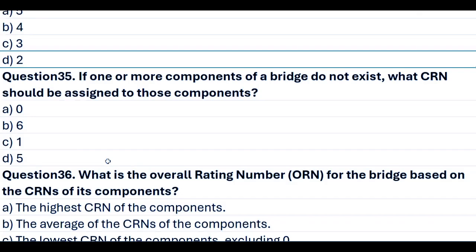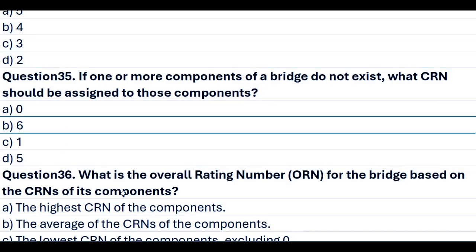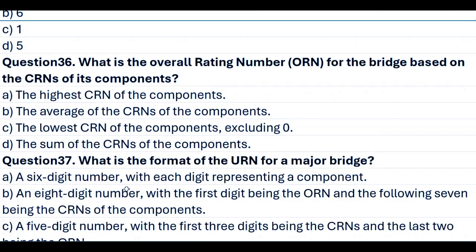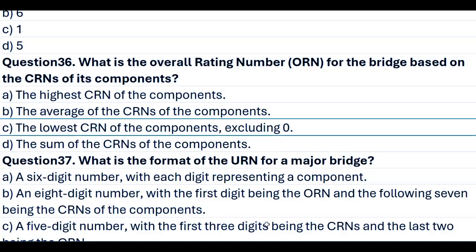Question 35. If one or more components of a bridge do not exist, what CRN should be assigned to those components? A. 0. B. 6. C. 1. D. 5. Answer B. 6. Question 36. What is the Overall Rating Number (ORN) for the bridge based on the CRNs of its components? A. The highest CRN of the components. B. The average of the CRNs of the components. C. The lowest CRN of the components, excluding 0. D. The sum of the CRNs of the components. Answer C. The lowest CRN of the components, excluding 0.